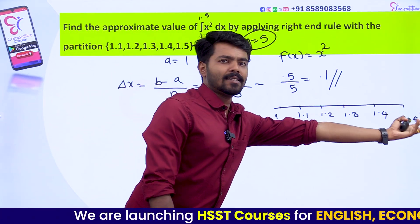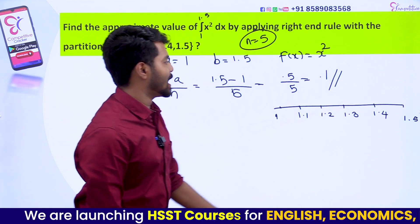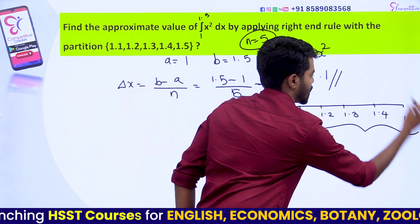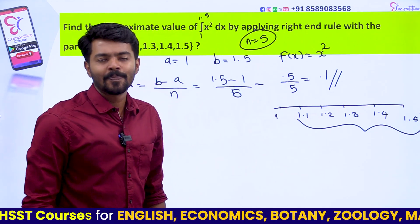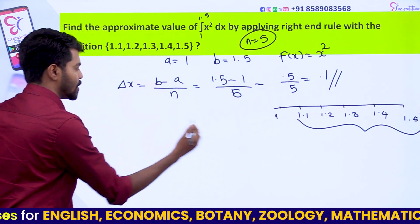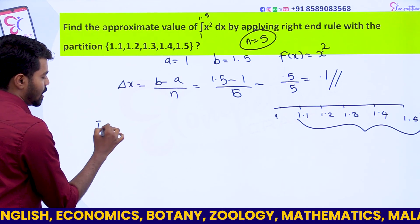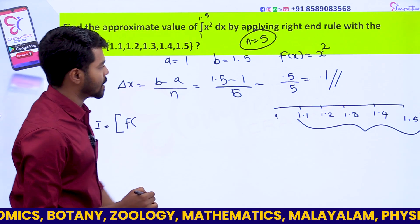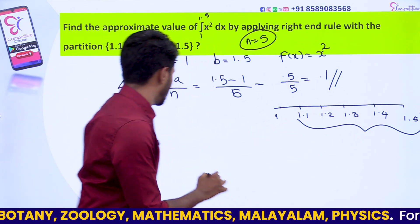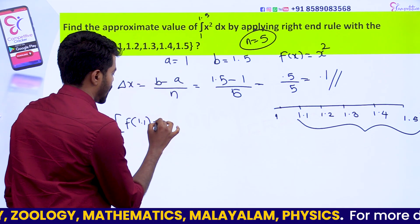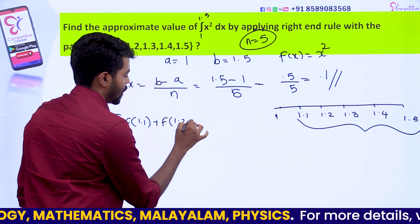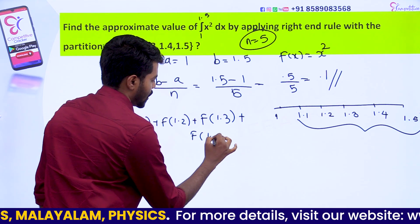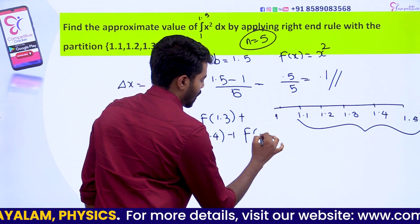So write out 5 values. The integral i is equal to the sum: f of 1.1, plus f of 1.2, plus f of 1.3, plus f of 1.4, plus f of 1.5, multiplied by delta x.